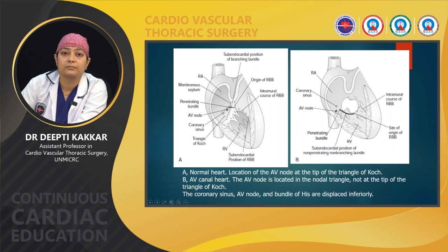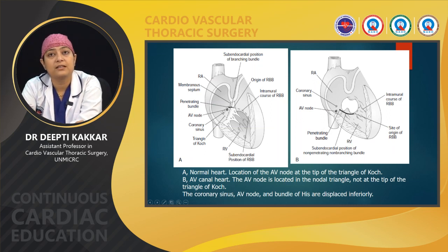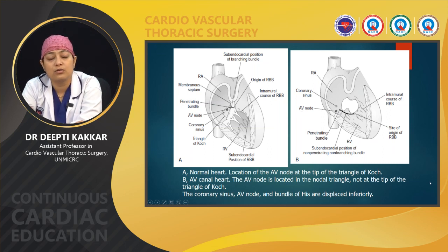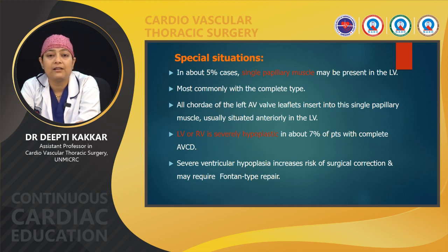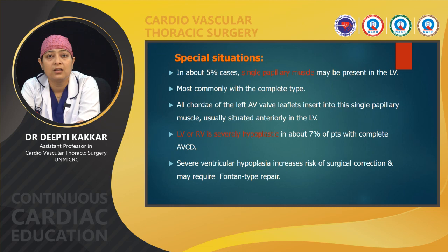In about 5 percent of cases there may be a single papillary muscle in the left ventricle, most common in complete AV canal. All the chordae of the left AV valve leaflets insert into this single papillary muscle, usually situated anteriorly in the LV. The LV or RV may also be severely hypoplastic in about 7 to 8 percent of patients with complete AV canal; severe ventricular hypoplasia increases the risk of surgical correction and may require a single-ventricle Fontan-type repair.